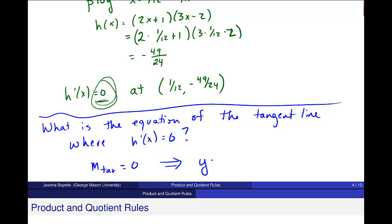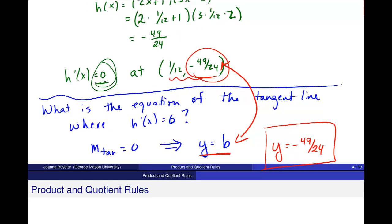So this should be the exact same value right here. It's passing through this point negative 49 over 24 as the y value. It's passing through the point 1/12 and negative 49 over 24. If the y value never changes down here, then the equation of this line must be y equals negative 49 over 24. But this will also be what you get if you were to plug in this point, the 1/12 negative 49 over 24, and the slope of 0 into the point slope form to get the equation of the tangent line. But this is the equation of the tangent line where the derivative is 0.